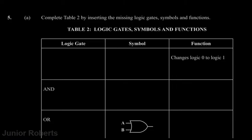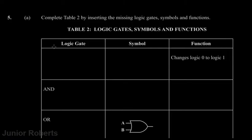Here we have our table which we'll be filling out accordingly. It lists the logic gate, the corresponding symbol, and the corresponding function for each logic gate. In the first row we're given the function: it changes a logic zero to a logic one. The logic gate that changes a logic zero to a logic one is what we call an inverter, and the other name for the inverter is the NOT gate.